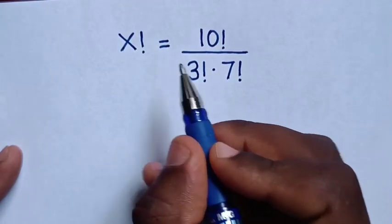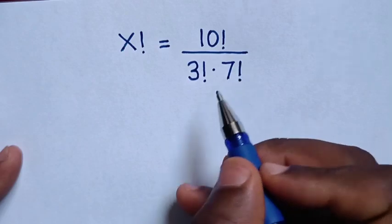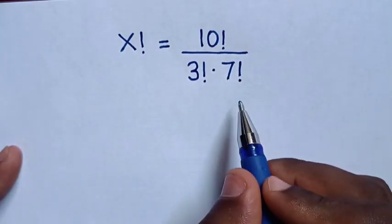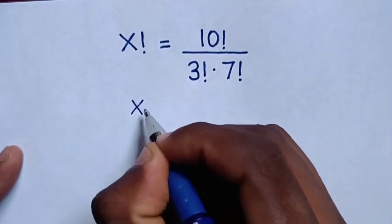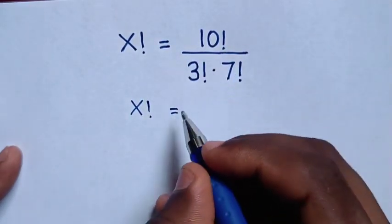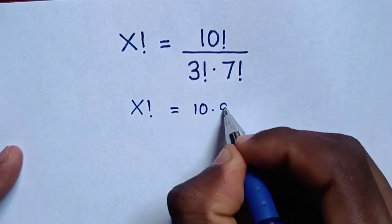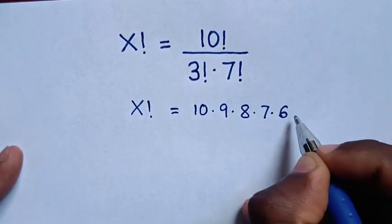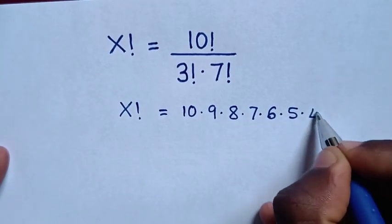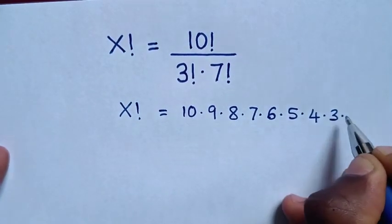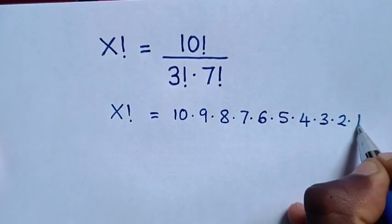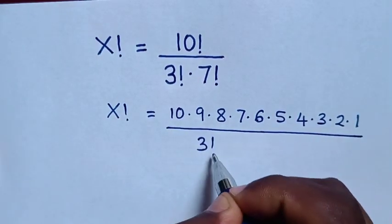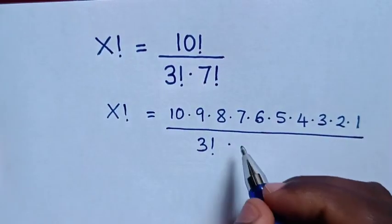How to solve x factorial equals 10 factorial over 3 factorial times 7 factorial to find the value of x. So x factorial equals 10 factorial, which is the same as 10 times 9 times 8 times 7 times 6 times 5 times 4 times 3 times 2 times 1, then over 3 factorial times 7 factorial.